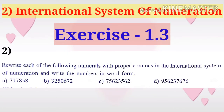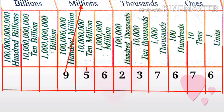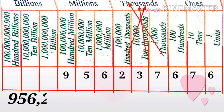Now take a problem from Exercise 1.3: rewrite each of the following numerals with proper commas in the international system of numeration and write the numbers in word form. Take problem D: 9,562,376,76. Write this digit in the place value chart of the international system from right to left: 6, 7, 6, 7, 3, 2, 6, 5, 9. Observe that 9, 5, 6 are in the millions place, so after writing 9, 5, 6 put a comma.